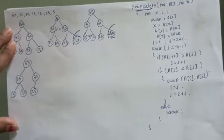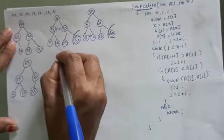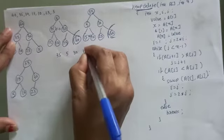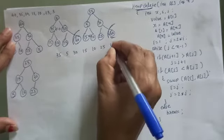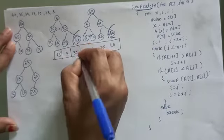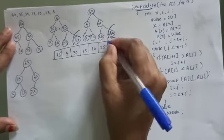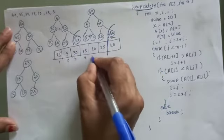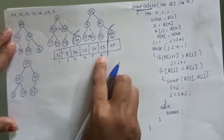The corresponding array structure is now: 35, 5, 30, 15, 10, 25, and 40. But the heap size should be decreased by 1, so the effective heap size is now 6.